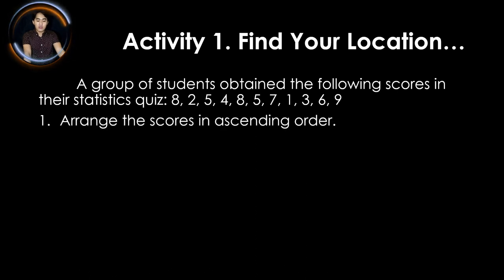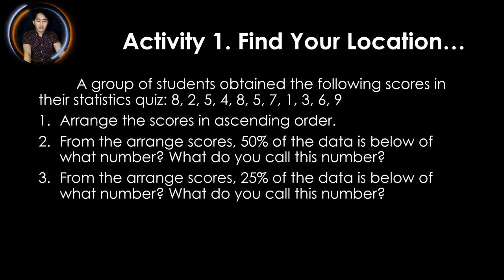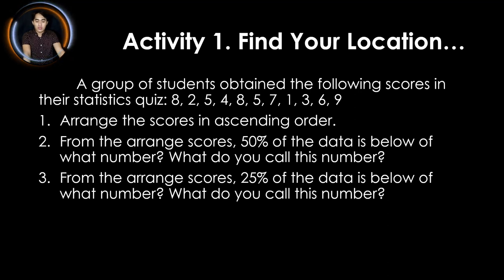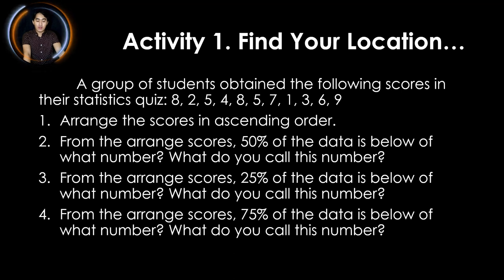Our first task is to arrange the scores in ascending order. Second, from the arranged scores, 50% of the data is below what number and what do you call this number? Third, 25% of the data is below what number and what do you call it? And fourth, 75% of the data is below what number and what do you call that number?